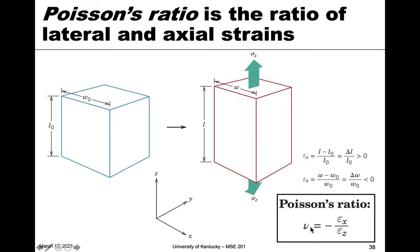So Poisson's ratio is given here, and it's again the lateral over the axial. So axial z is in the direction here, and then x is representing that along the lateral direction.